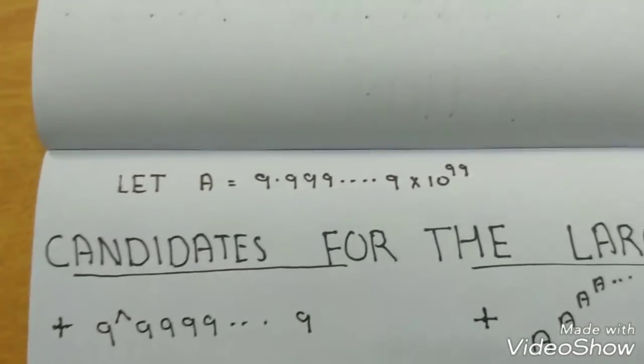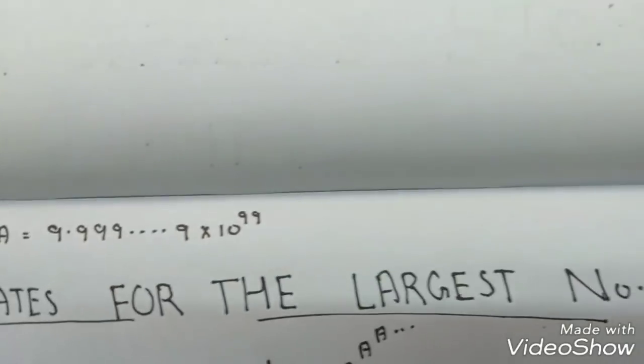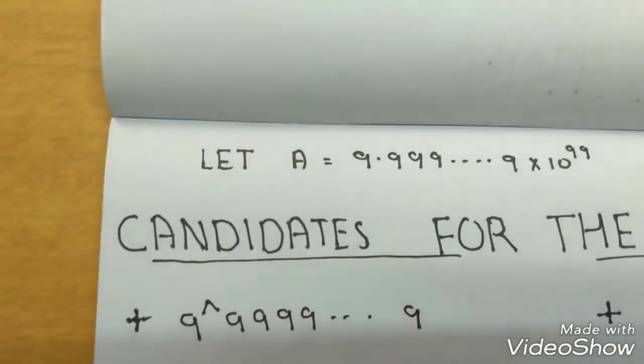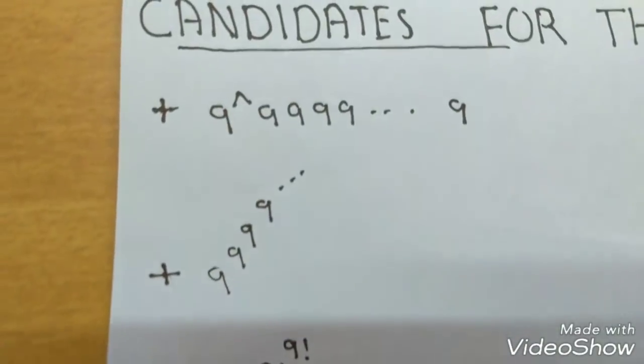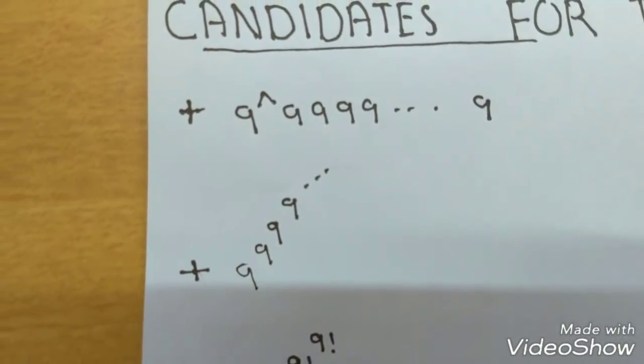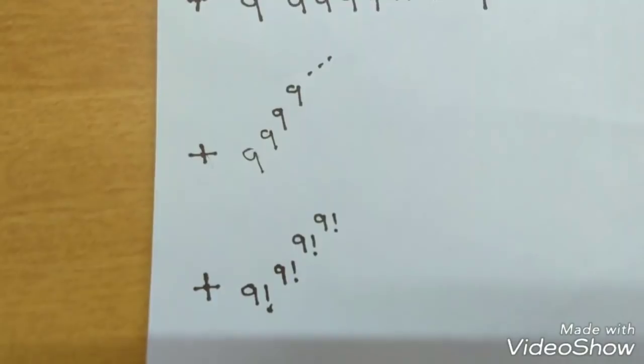Then some of the candidates for being the largest number are 9 raise to 99, 9 raise to 9 raise to 9, 9 factorial raise to 9 factorial raise to 9 factorial and it goes on.